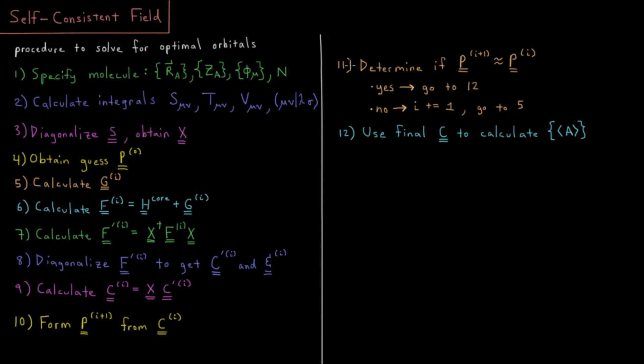And step 11 is to determine whether or not we're done. So basically step 11 is to determine whether or not the density matrix for the I plus 1 iteration is sufficiently similar to the density matrix for the I-th iteration. So there are various metrics to do that, but basically determining whether the elements are close enough or not to one another to proceed. So if they are similar enough, then we go to step 12 and we're done. And if not, then we just increase the iteration number we're on and we go back to step number five.